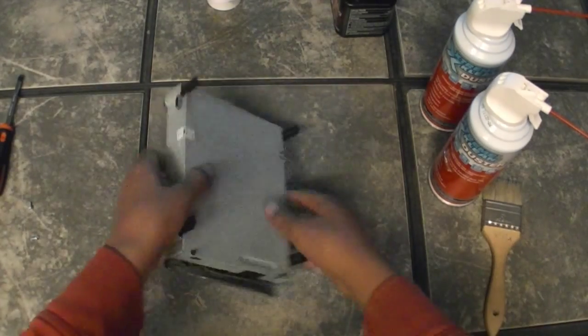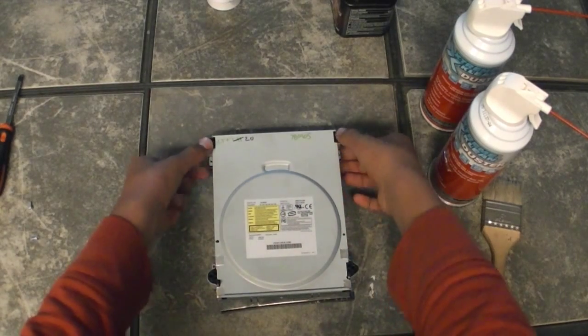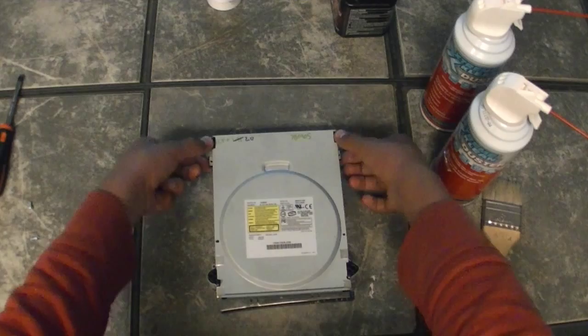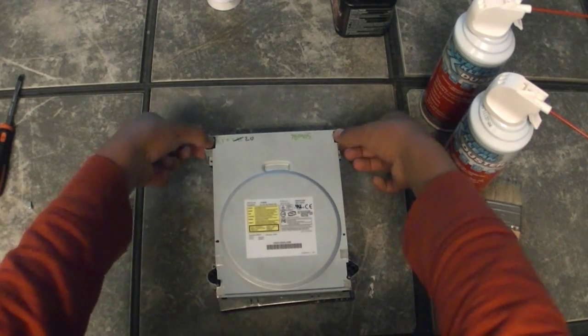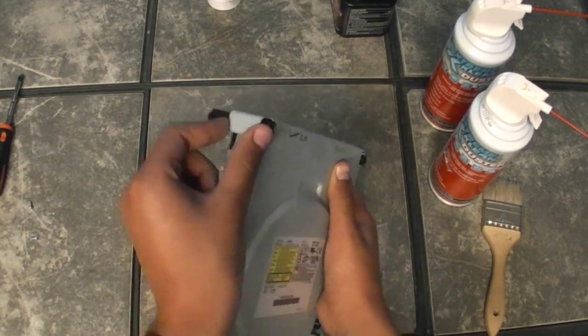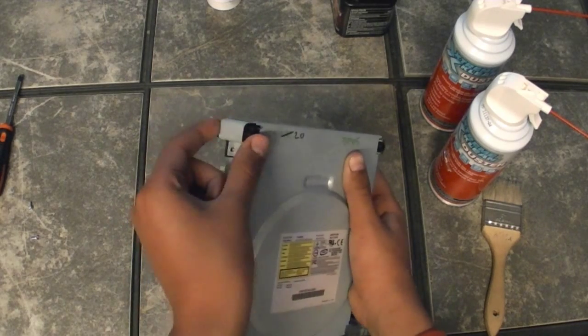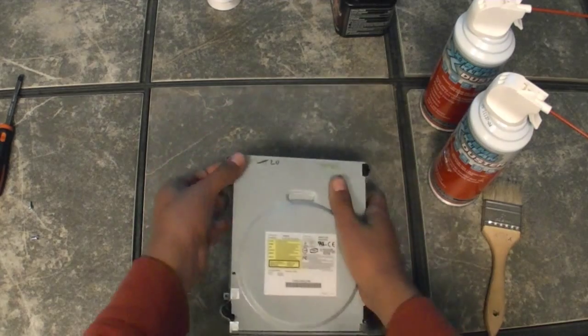Now you're gonna want to turn the DVD Drive around and what you want to do with your fingers, your thumbs, you want to push on this black and at the same time with your pointy finger you want to hold this on the bottom, not the black though, the gray. So you want to do it on both sides and then just push.